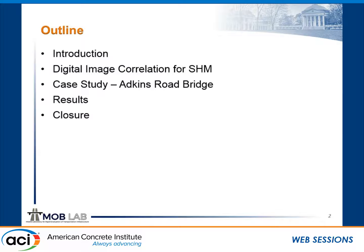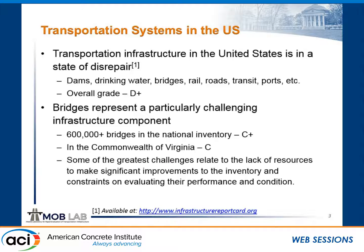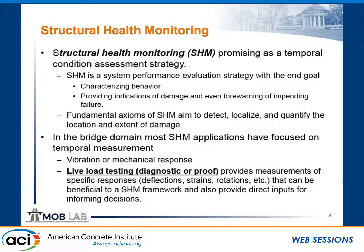I'll spend the analysis part talking about a case study and a couple of select examples of load test results, then finish up with a little closure. Most of you are aware of the state of transportation infrastructure in the United States. If we look at our overall grade, we're giving a D plus. We have over 600,000 bridges in our national inventory, giving an overall rating of about C plus. In Virginia, we have a rating of about C. Some of the greatest challenges for this infrastructure—particularly bridges—is the lack of resources and manpower to handle such a vast population of structures.